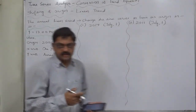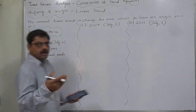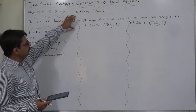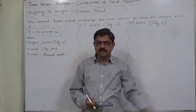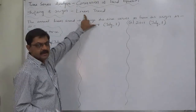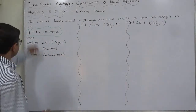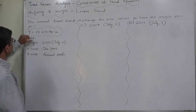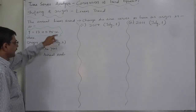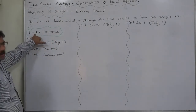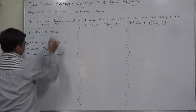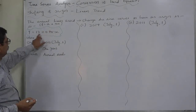In this lecture and some more lectures we are going to discuss about the shifting of origin. In this case we are going to discuss shifting the origin with respect to linear trend. Let's take a case and try to understand it. The annual linear trend is y-estimated equals to 13 plus 0.75x.